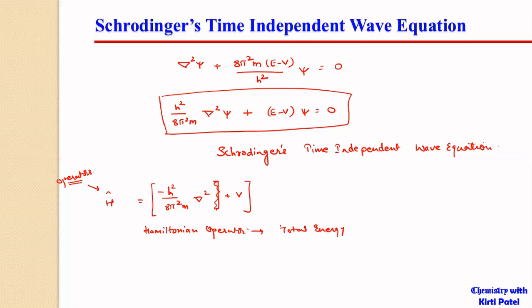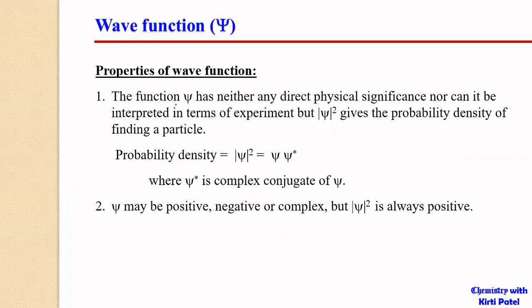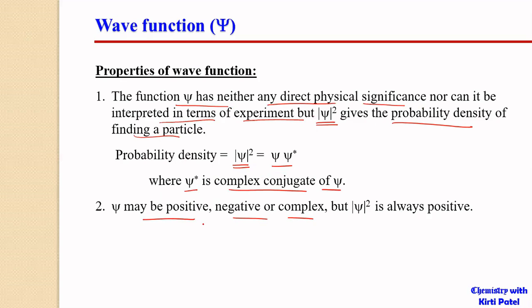So this is the Schrödinger time-independent wave equation. Revisiting the wave functions: the wave function has neither any direct physical significance nor can it be interpreted in terms of experiment, but ψ² gives the probability density of finding a particle. This is very important. ψ² gives the probability density of finding a particle in a confined space. Probability density is ψ² or ψ·ψ*, where ψ* is the complex conjugate of ψ. ψ may be positive, negative, or complex, but ψ² is always positive.